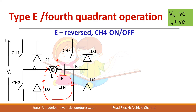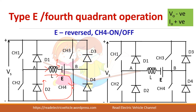For fourth quadrant operation, CH4 is turned on and off. In the second quadrant CH2 is turned on and off, whereas in the fourth quadrant CH4 is used. When CH4 is on, current flows from A to B so current is positive, but this is a freewheeling period so output voltage is zero. When CH4 is turned off, current continues to flow in the same direction to the source, and since plus is connected to B, the voltage is negative.